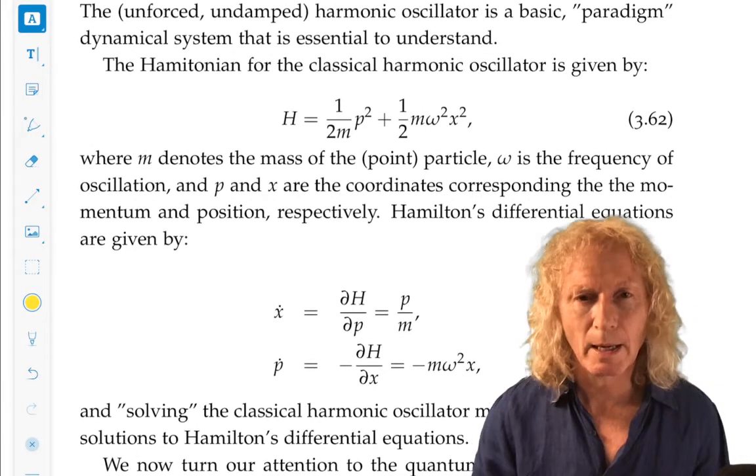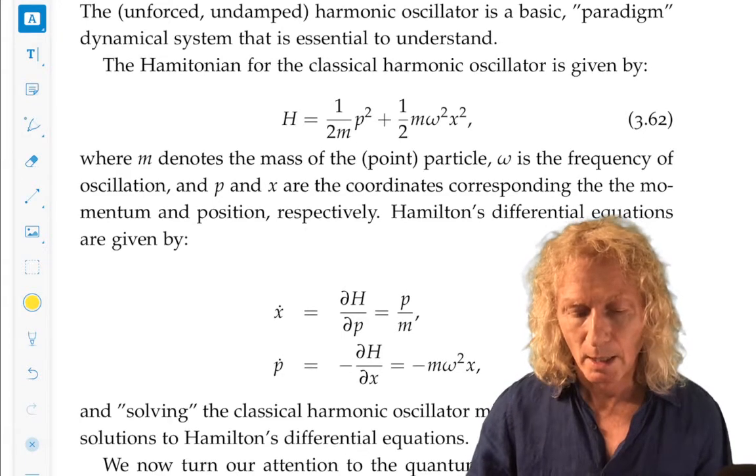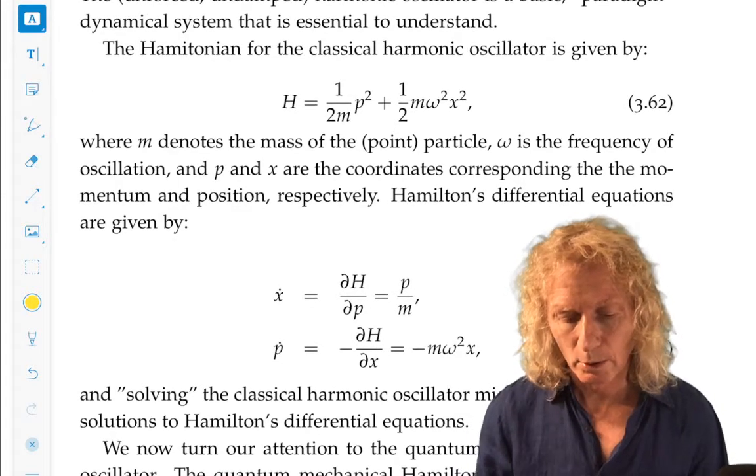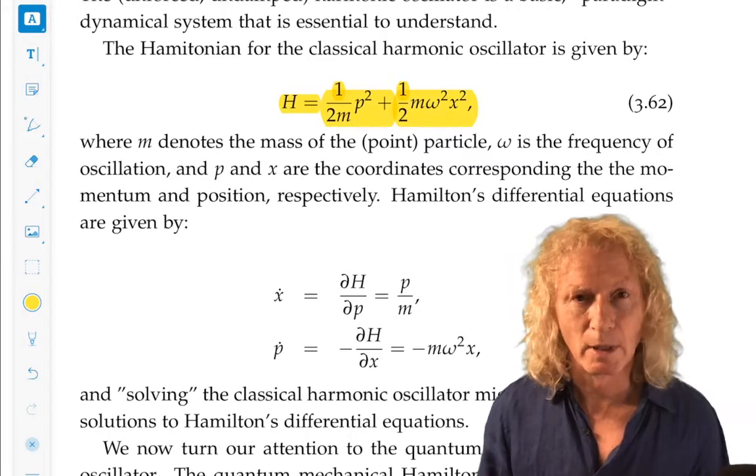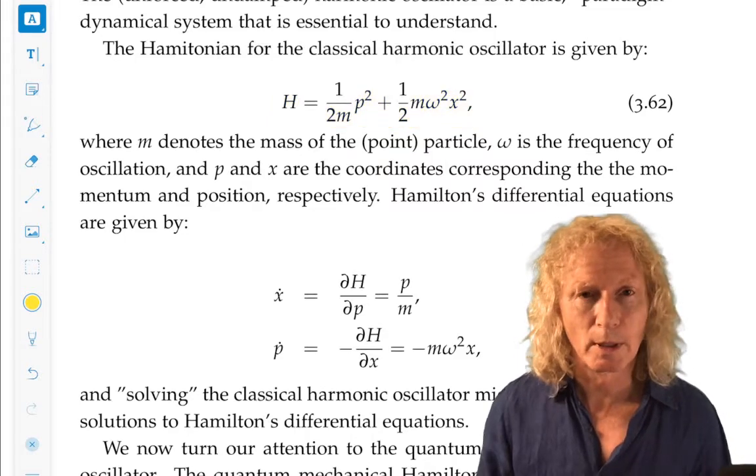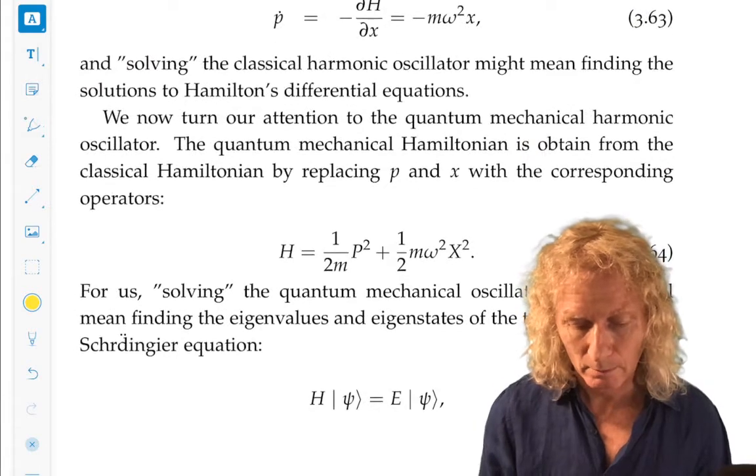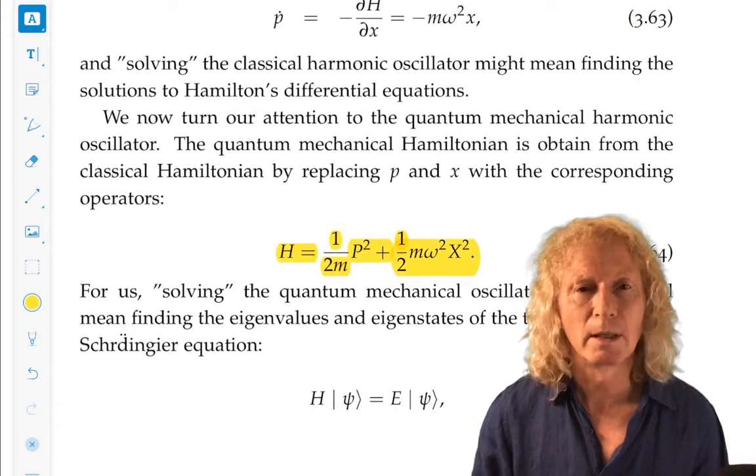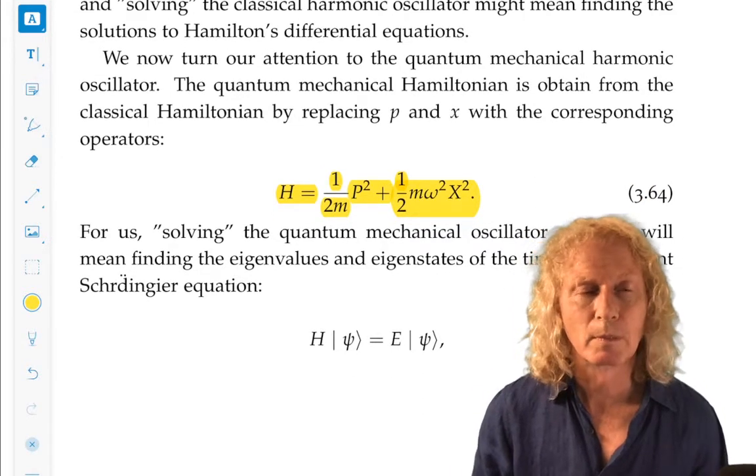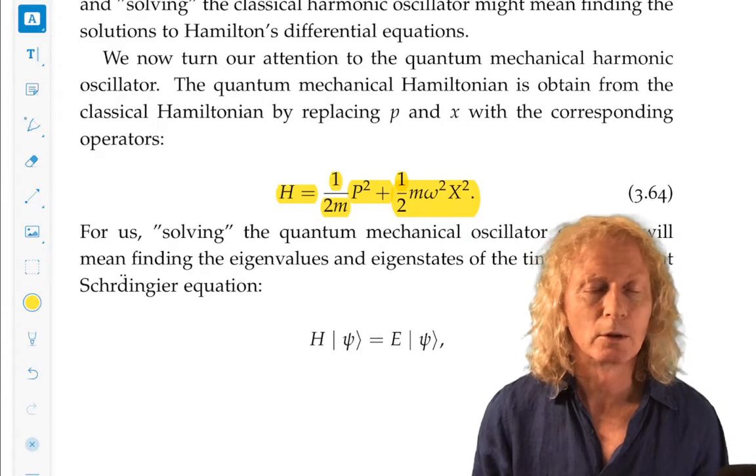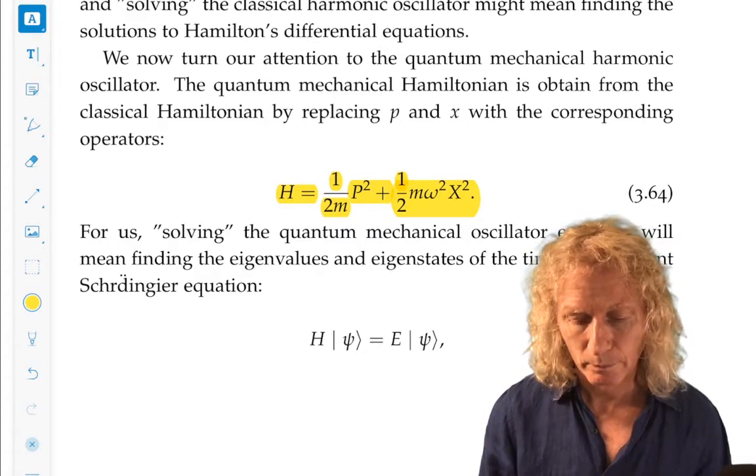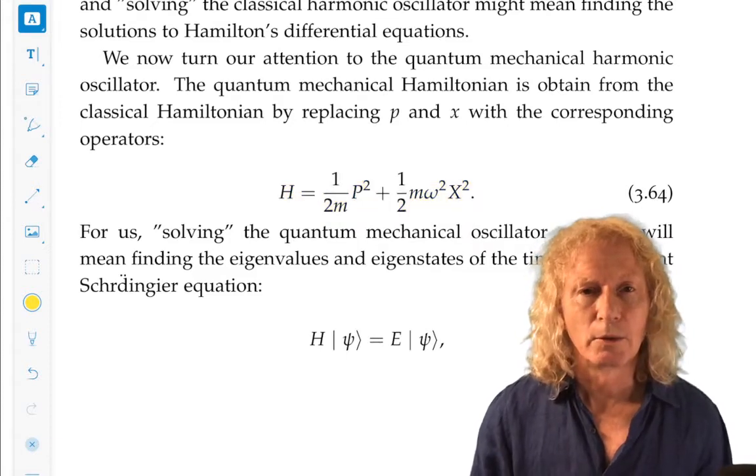So how do we pass to the quantum harmonic oscillator, and what would it mean to solve the quantum harmonic oscillator? Well, we could just take this classical Hamiltonian and replace the position with the position operator, and the momentum with the momentum operator. And that's what we're going to do. And that's what we have down here. Remember, uppercase P is one-dimensional momentum operator, uppercase X is one-dimensional position operator. And we know exactly what those operators are, and we've worked out a number of their consequences.